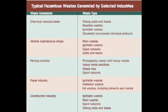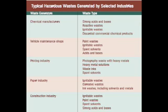Now that we have established just what a hazardous waste is, it is also important to know specific industries that cause the bulk of this waste. Industries like chemical manufacturing, vehicle maintenance shops, the paper and printing industries, the construction industry, cleaning and cosmetic manufacturing, furniture and wood manufacturing, and finally metal manufacturing. Each one of these industries produces a different type of hazardous waste that has its own harmful impact upon the environment and humans.